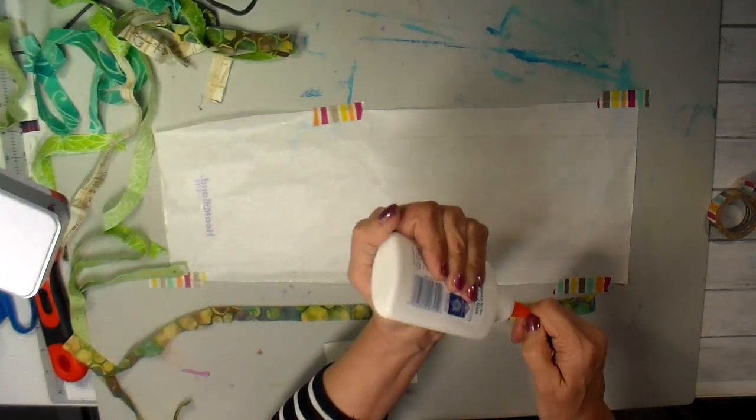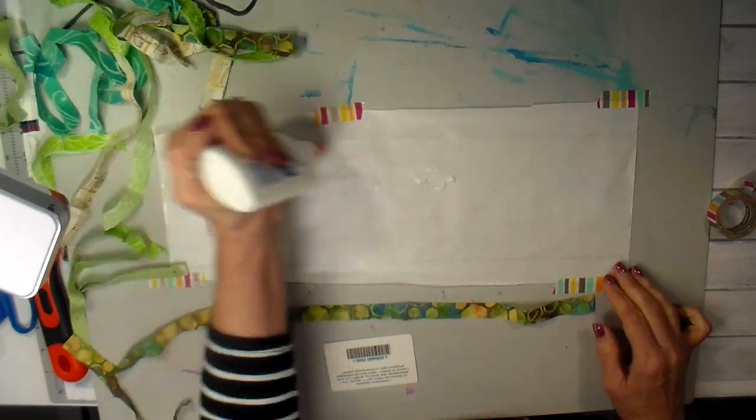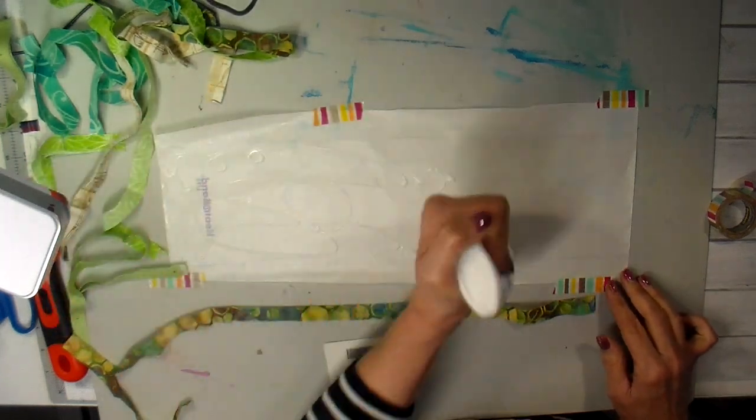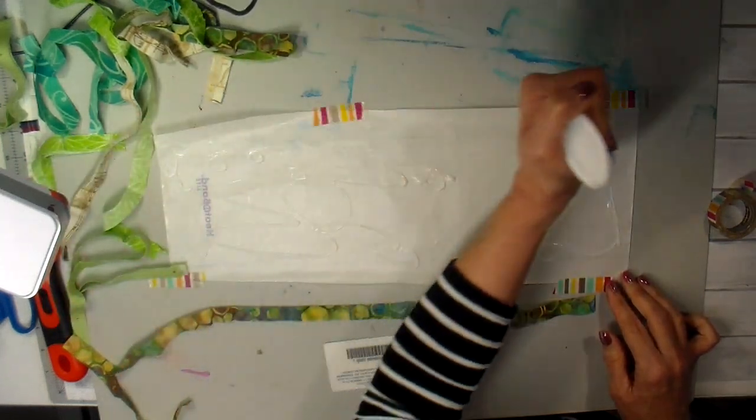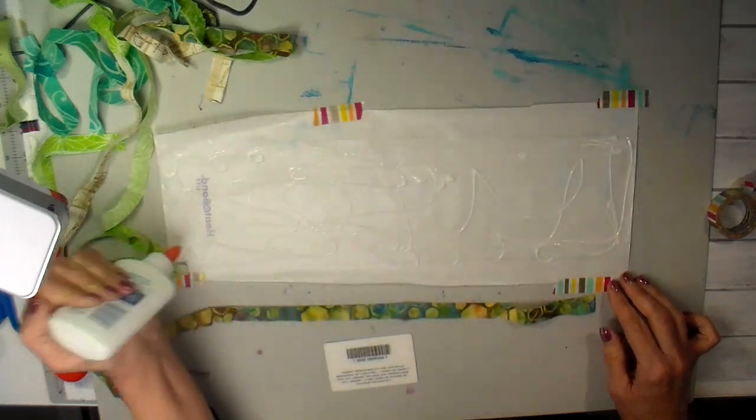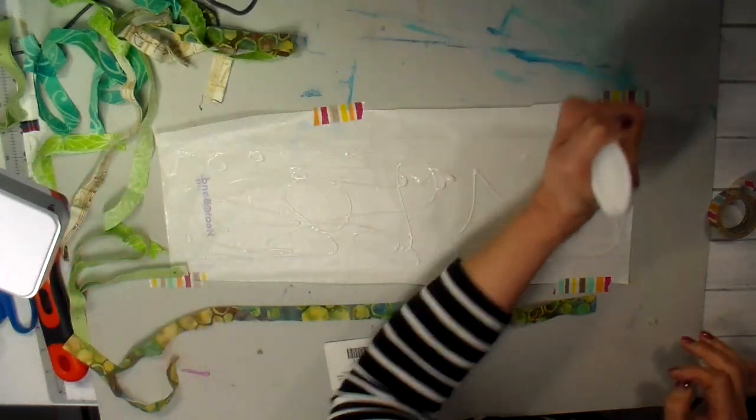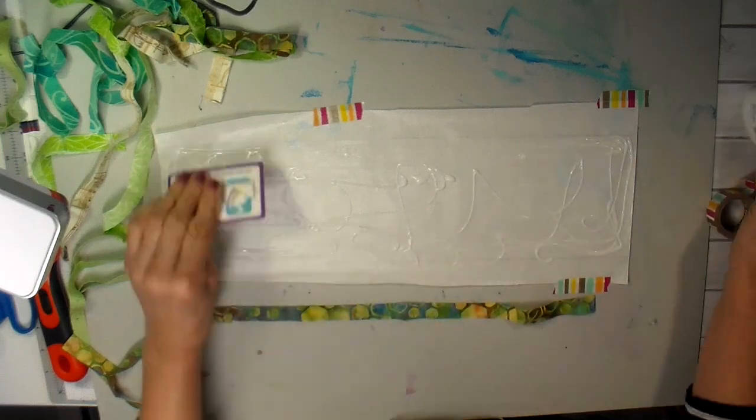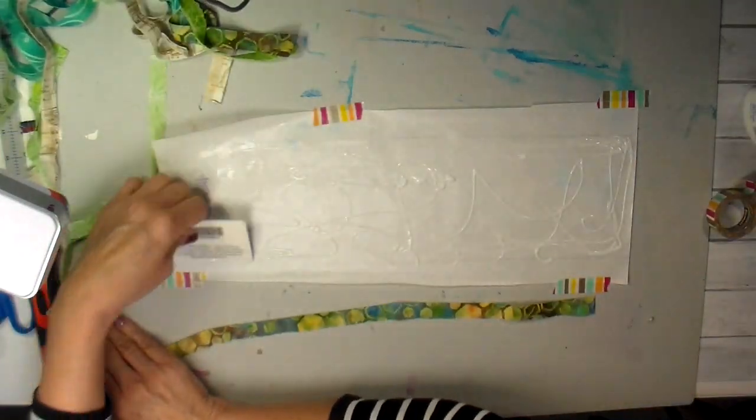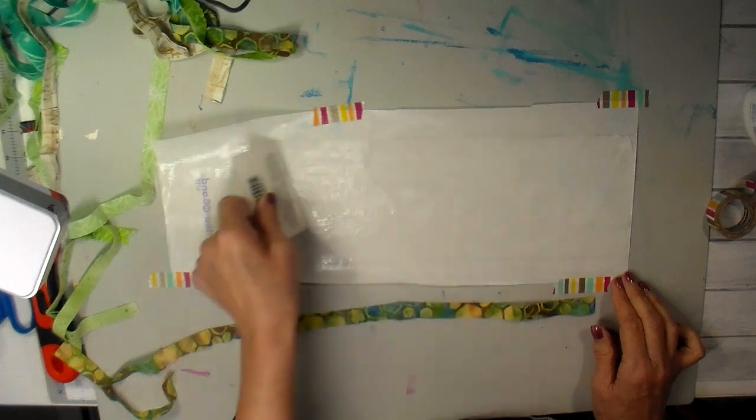This is how I like to do my scrappy appliques, and I'm spreading my white glue on the top or the adhesive side of this heat and bond. So I'm going to have glue on top of glue basically, but this is the easiest way I found to do my scrappy appliques.